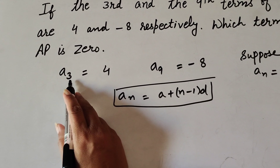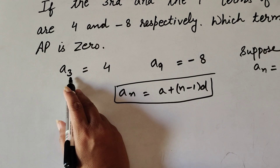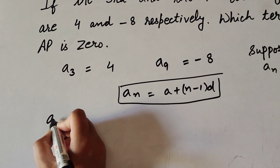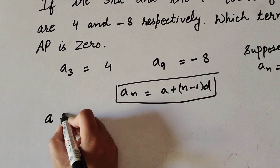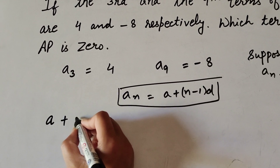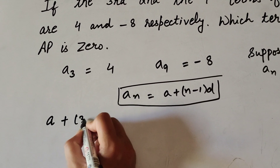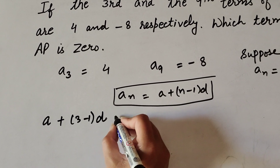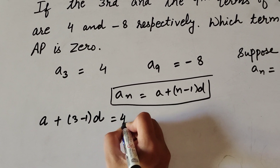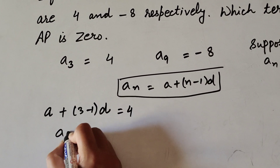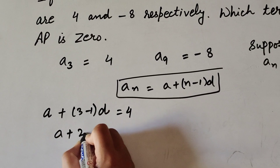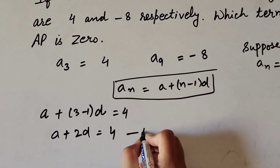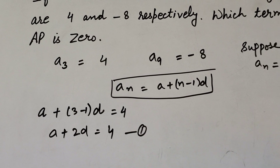For a3, the 3rd term of the AP equals 4. Here n equals 3, so: a plus (3 minus 1)d equals 4, which gives us a plus 2d equals 4. We mark this as equation number 1.